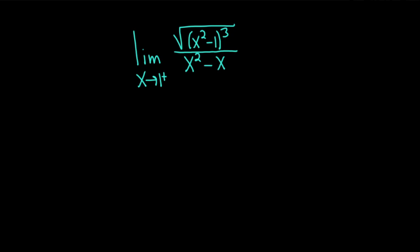Hello, in this video we're going to find the limit as x approaches 1 from the right of the square root of x squared minus 1, quantity cubed, all being divided by x squared minus x.